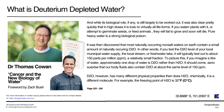'It was then discovered that most naturally occurring non-salt waters on Earth contain a small amount of naturally occurring D2O. If you test the D2O level of your local municipal water supply, local stream, or freshwater lake, it will typically test out to about 150 parts per million (ppm). To picture this, imagine a liter of water — approximately one drop of water is D2O rather than H2O. Our bodily fluids also contain D2O at about the same level of 150 ppm. However, D2O has many different physical properties than H2O.'